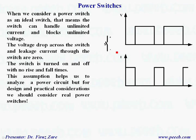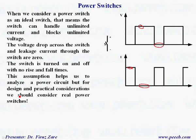When we consider a power switch as an ideal switch, that means the switch can handle unlimited current and block unlimited voltage — there is no limit on voltage or current level. The voltage drop across the switch when it is on is almost zero, and the leakage current through the switch when it is off is also zero. The switch is turned on and off with no rise and fall times — just when we apply or remove the gate signal, the switch turns on and off in a very short time, so switching time is zero.